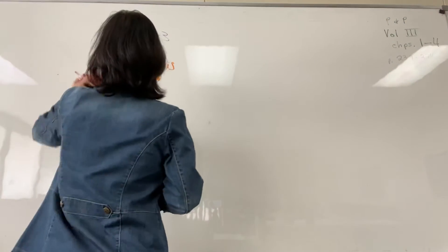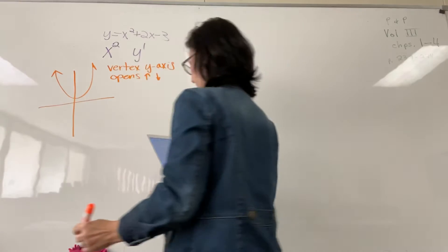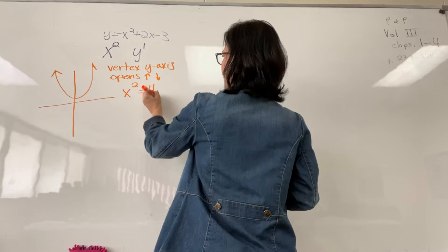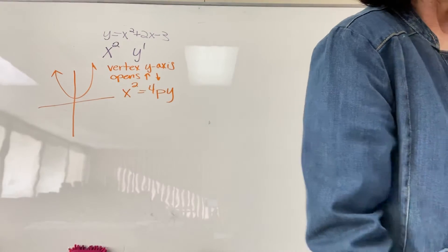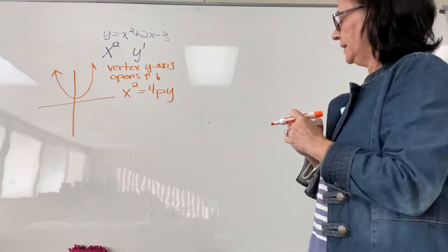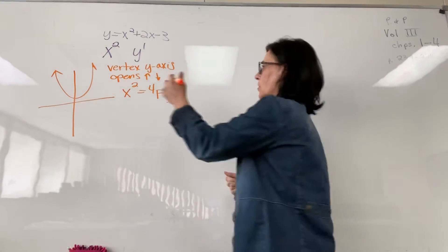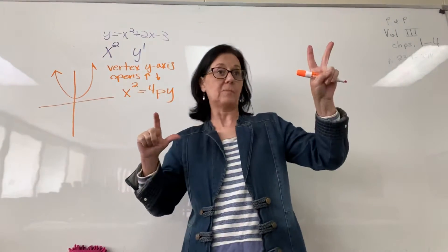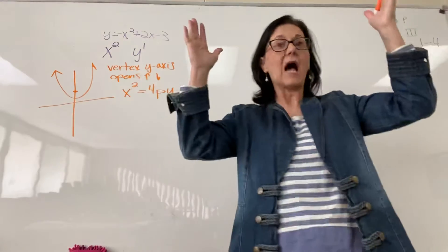I'm going to do one parabola — it opens up or down. Look at the equation: it's x squared equals 4 times the p-value and y. The p-value is like your focus point. With a parabola, normally with the ellipse and the hyperbola we had two focus points, but with a parabola we only have one, and it will lie inside the curve.